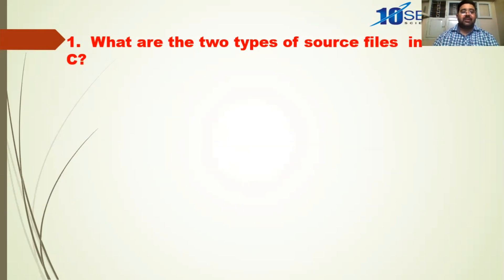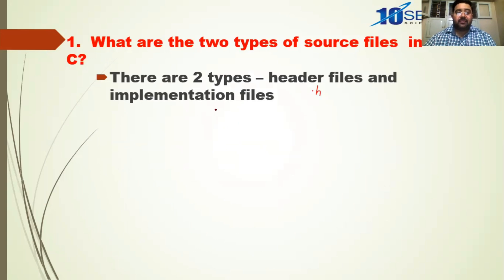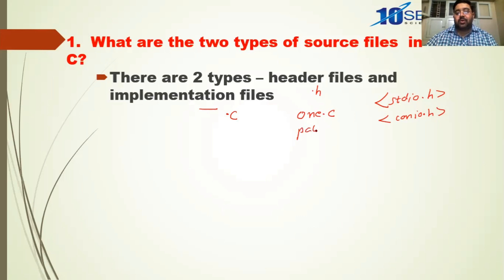What are the two types of source files in C? There are two types: one is the header file and the other is the implementation file. Header files always end with the extension .h, and implementation files always end with the extension .c. For example, stdio.h, conio.h are header files, and your programs you save with .c extension like one.c or palindrome.c.